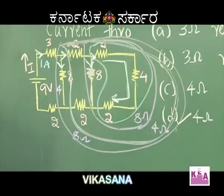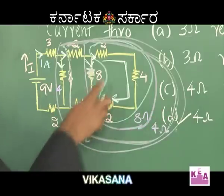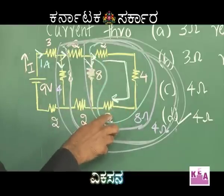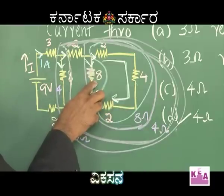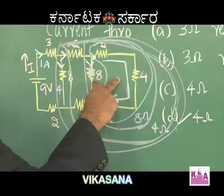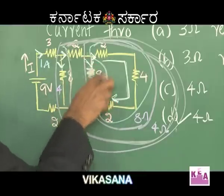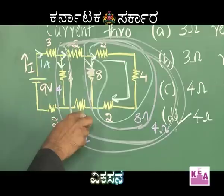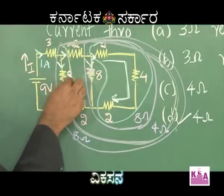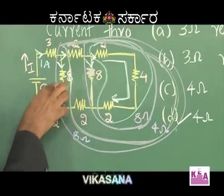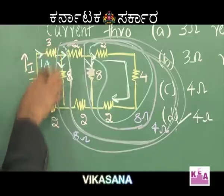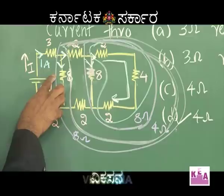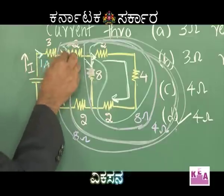Let me repeat this once again. 2 plus 4 plus 2 gives 8; this 8 in parallel with 8 gives 4. This 4 plus 2 plus 2 gives 8; this 8 in parallel with 8 gives 4. That 4 plus 2 plus 3 plus 2 gives 9. 9 volt by 9 ohm gives 1 ampere; that 1 ampere splits into 0.5 and 0.5.